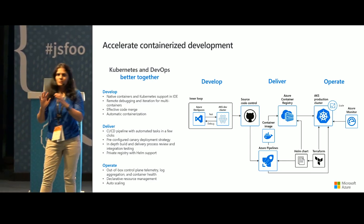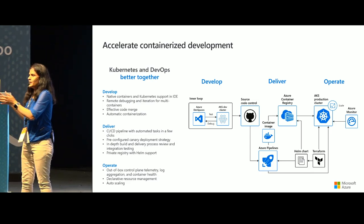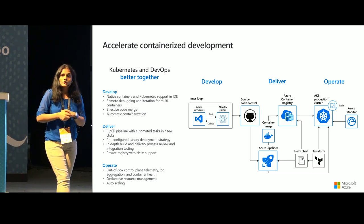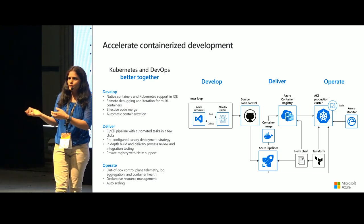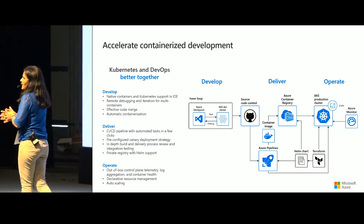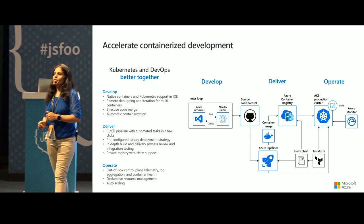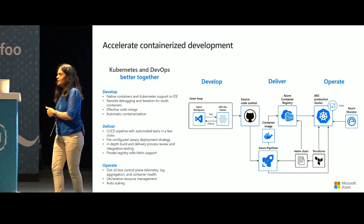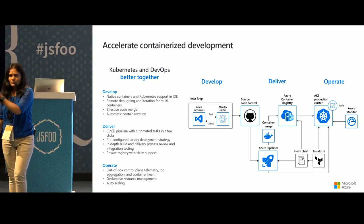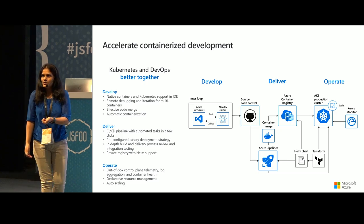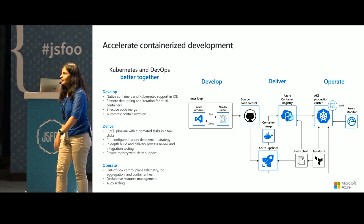For infrastructure as code, we initially started with ARM templates because we were using most services on Azure — Docker, Kubernetes. Later, because the customer needed to be portable enough to move from Azure to any other cloud provider, we built their infrastructure as code on Terraform. For observability and performance visibility, we used Azure Monitor and provided a plugin so they could switch to ELK or another stack, or within Kubernetes switch to Prometheus and Grafana.